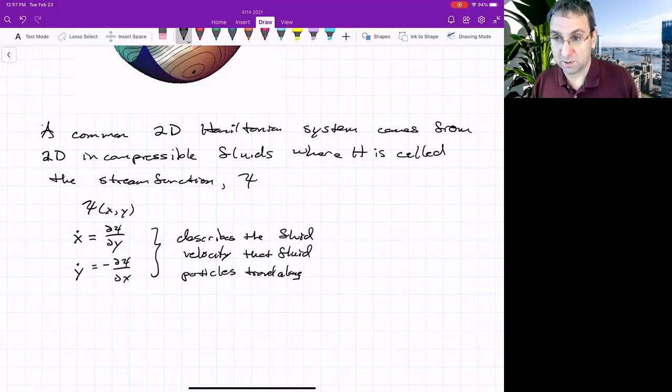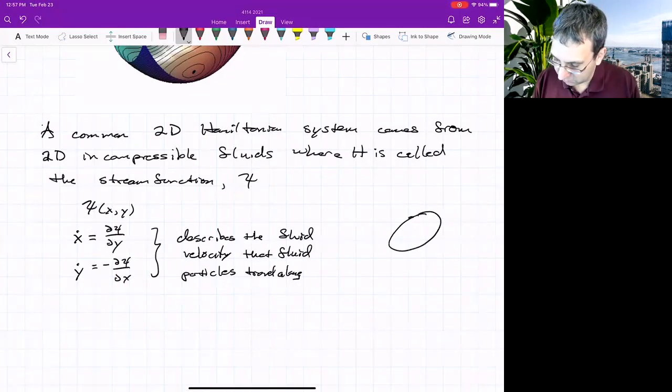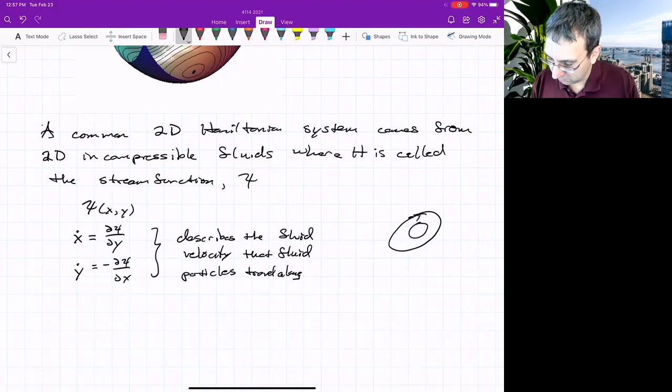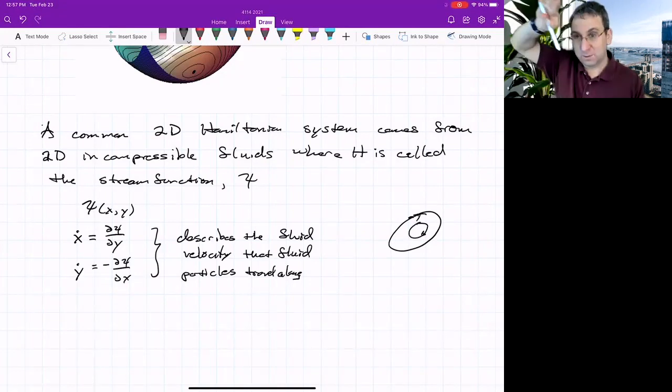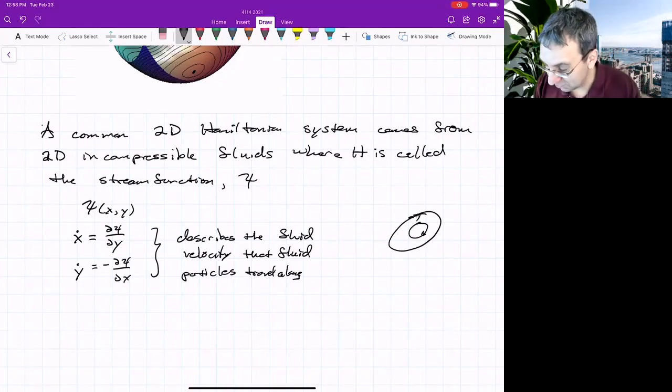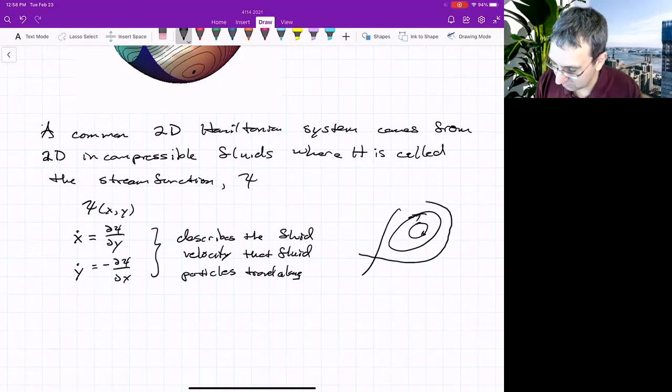So often when you've seen a stream function, you may have seen a stream function when weather is being described. They'll show often closed curves, and the stream function, 2D fluid flows will be along level sets of the stream function. And the stream function can do interesting things. Maybe there's some kind of saddle point type behavior and other things going on.